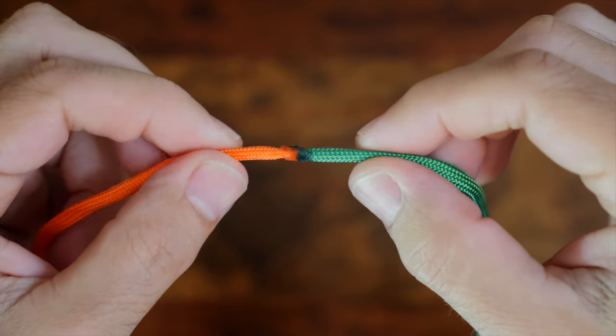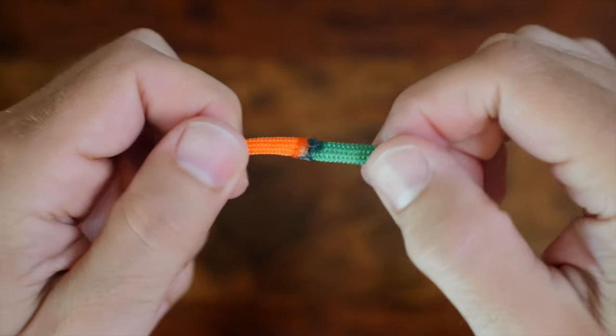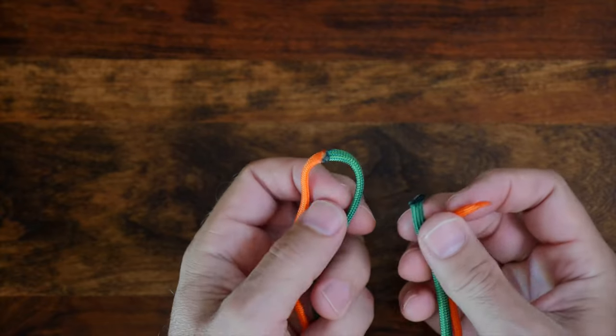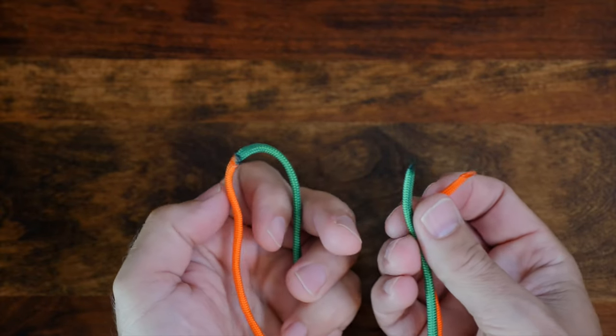Your joined cords will now look something like this. By the way, of course you can use any combination of colors. I'm using orange and green so that there's a strong contrast and you'll be able to see what I'm doing easily.